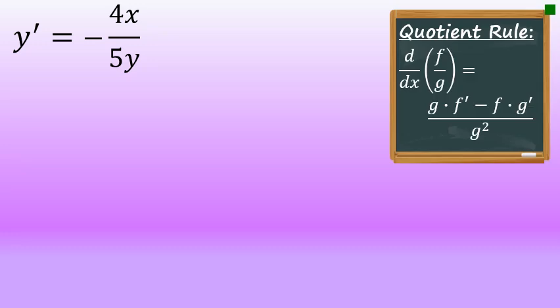To find the second derivative, we'll differentiate again using the quotient rule. The quotient rule says that if you take the derivative of any function of the form f over g, the derivative is the original denominator times the derivative of the numerator, minus the original numerator times the derivative of the denominator, all over the original denominator squared.